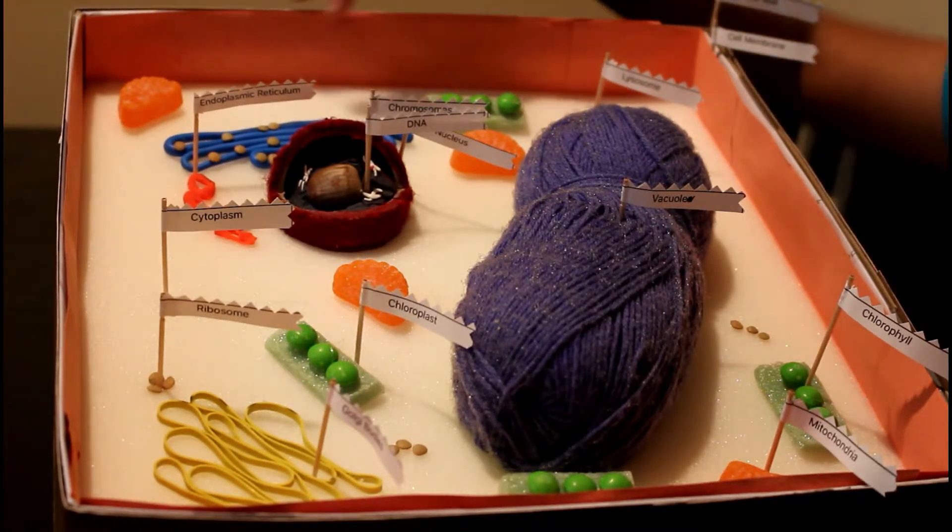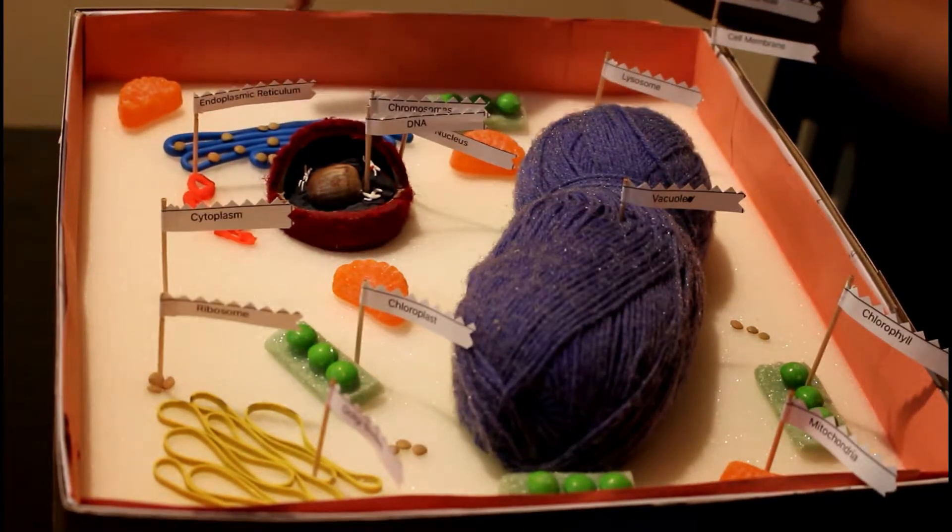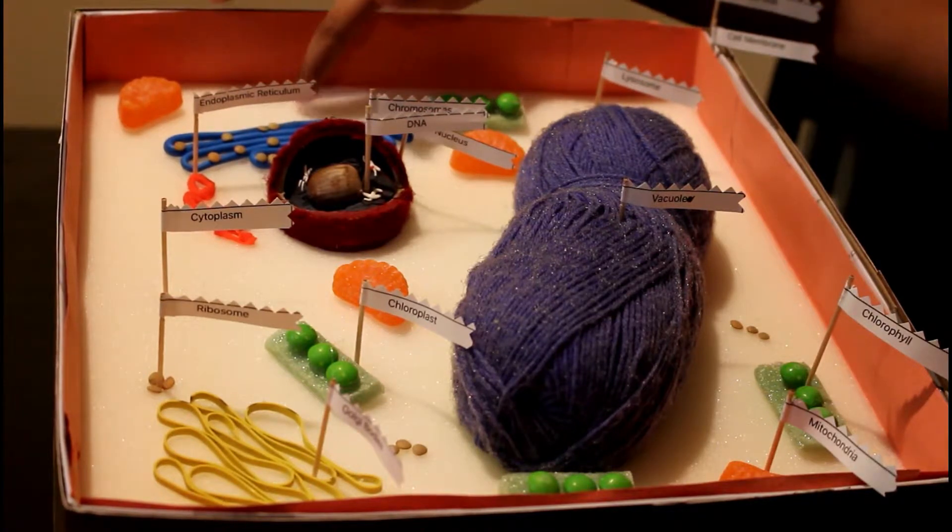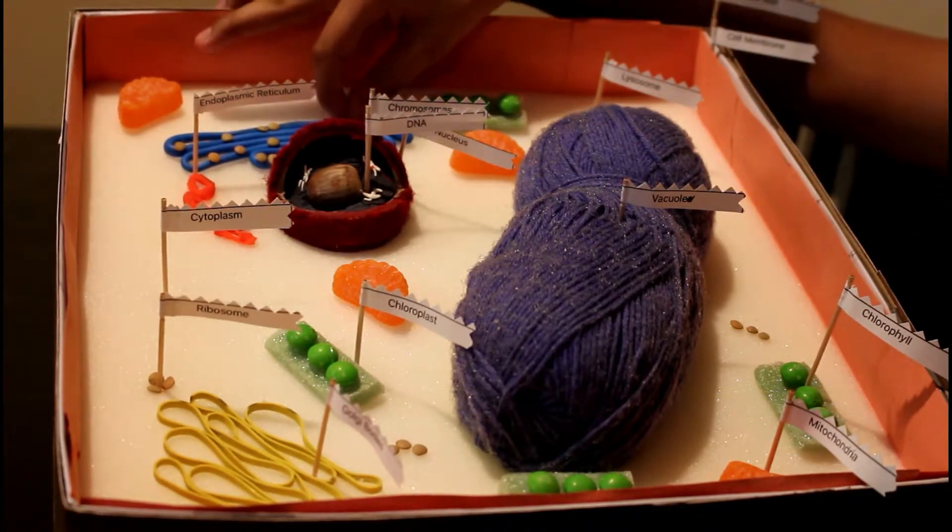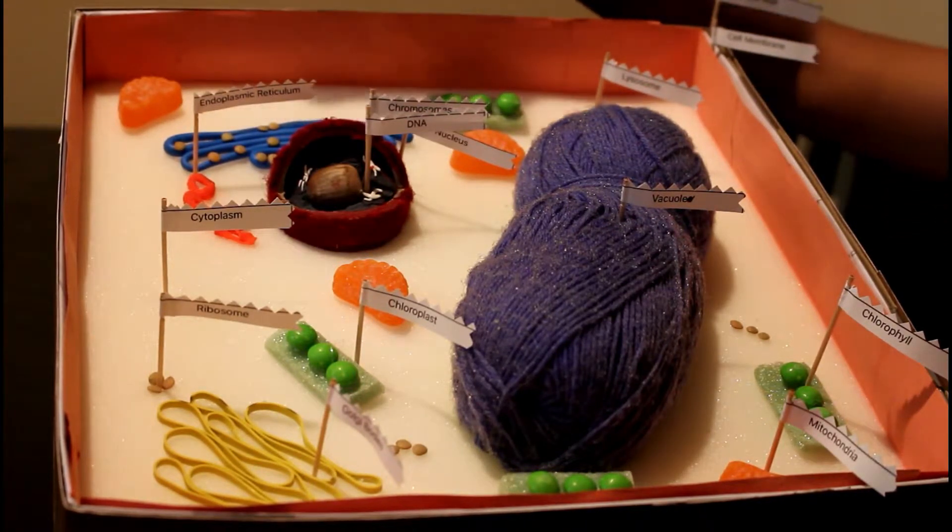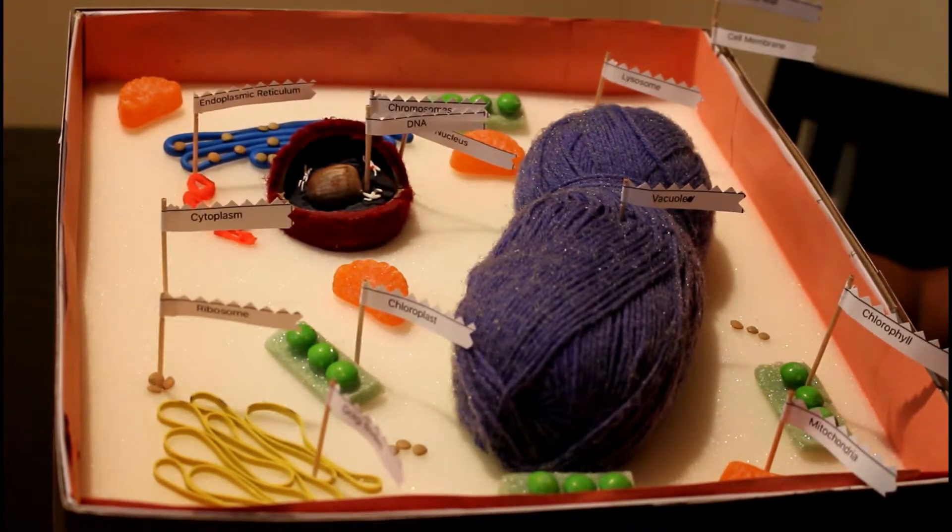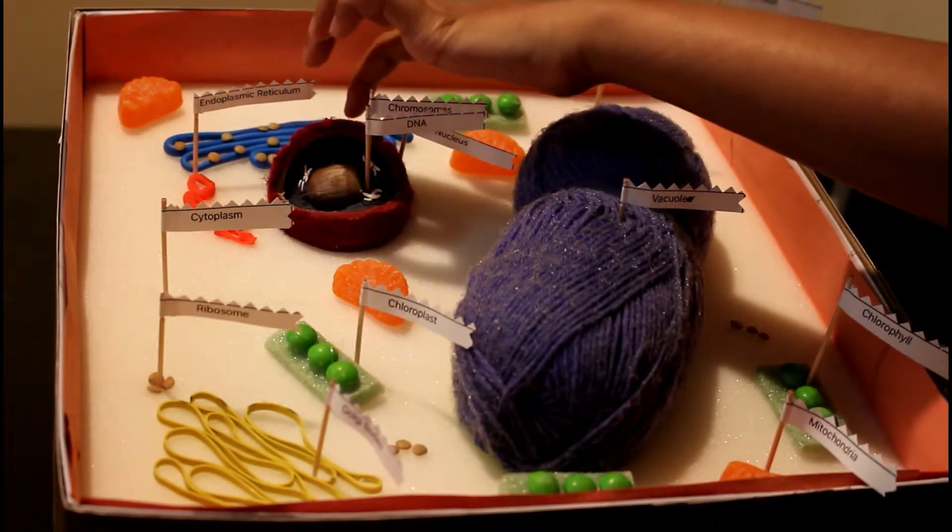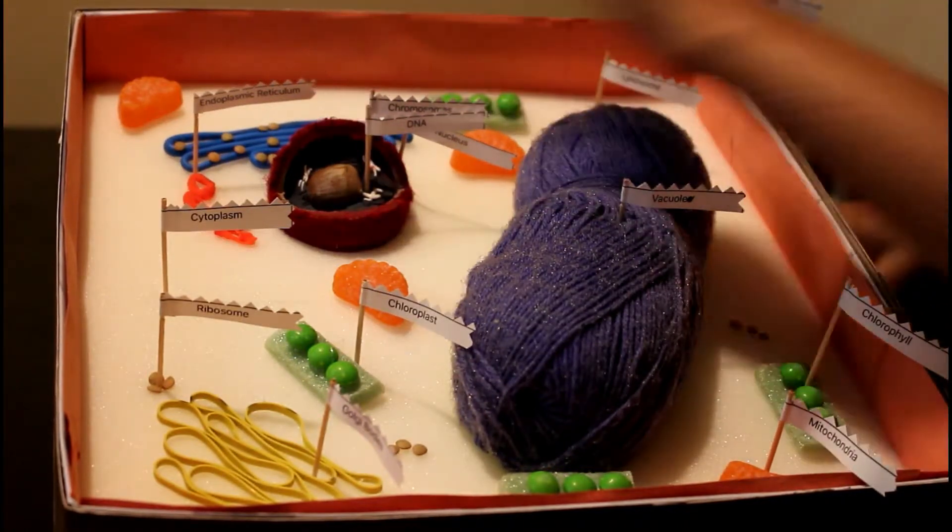All the organelles float in the cytoplasm. It's a clear gel-like fluid and it's a home to all the cell organelles. This is a nucleus. The nucleus is basically the head of everything. It tells all the organelles what to do.